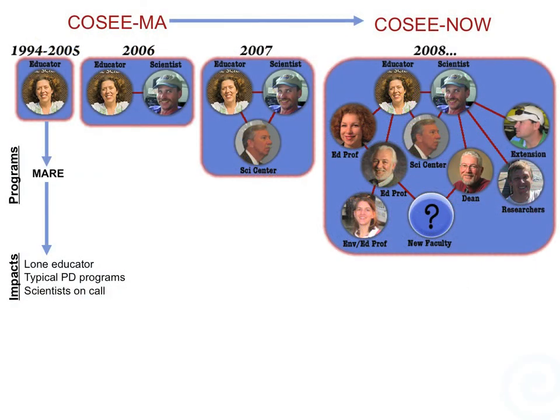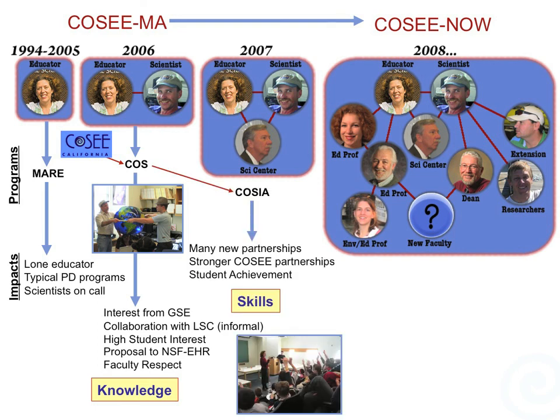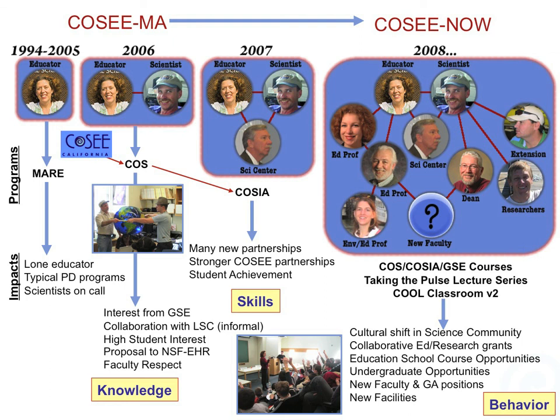This is a visualization of network connections being built over time in COSEE Mid-Atlantic and COSEE Networked Ocean World, where we had Janice McDonald, our PI, who years ago was really a lone educator on her own. But over time, she built established connections and collaborations with scientists and informal educators. And ultimately, what we have now in our COSEE Center is a large interconnected group. This network diagram really shows us visually how our group has grown and the projects and programs we've been able to accomplish as a result.